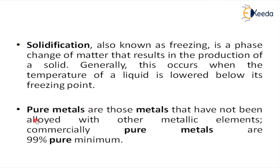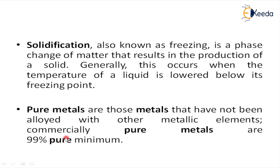Pure metals are those metals that have not been alloyed with other metallic elements. This is a very important and salient feature. Commercially, pure metals are a minimum of 99% pure. We cannot assure 100% purity — we can only assure at least 99% purity, with the remaining 1% being other materials.